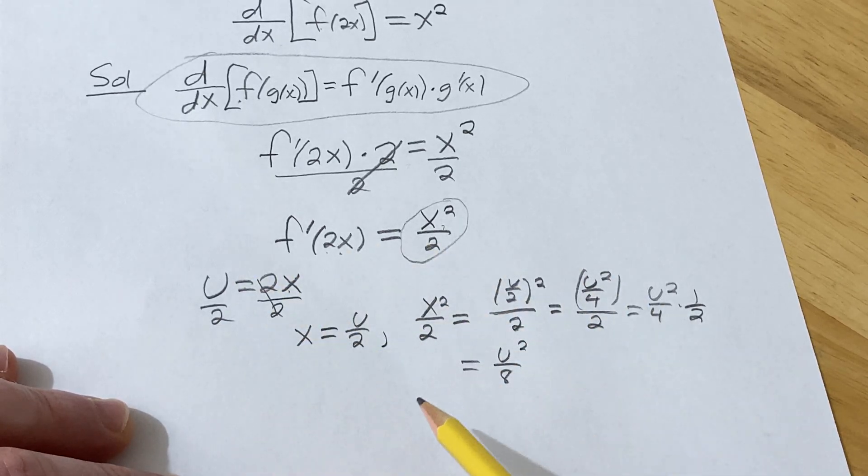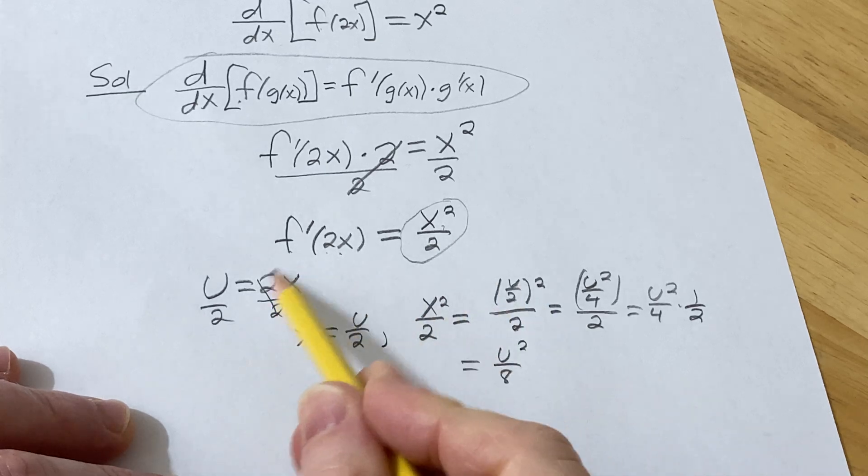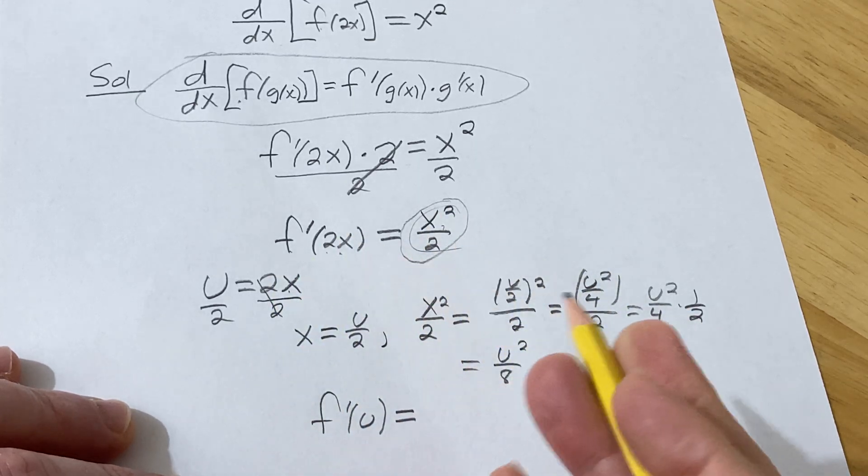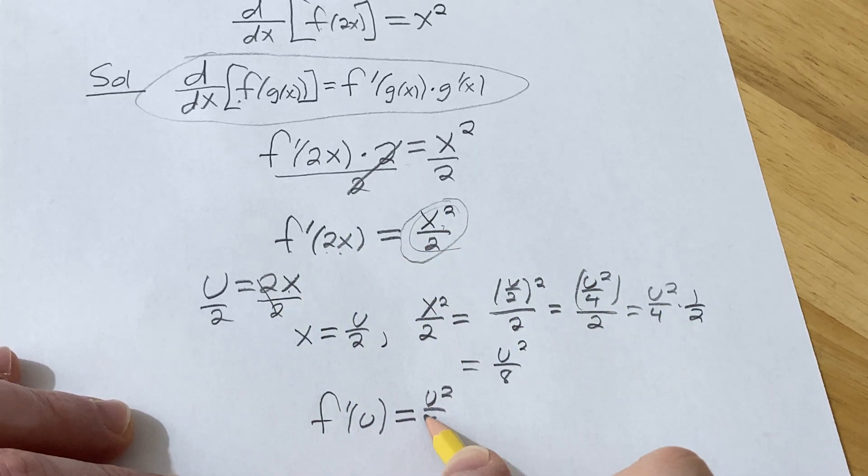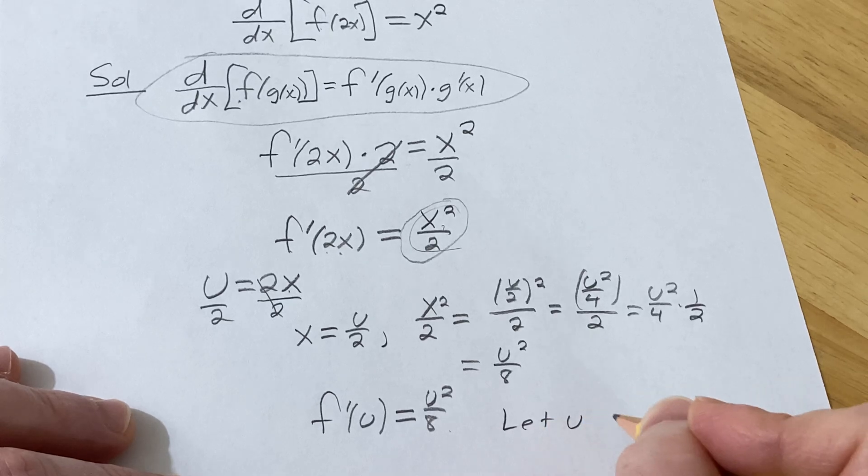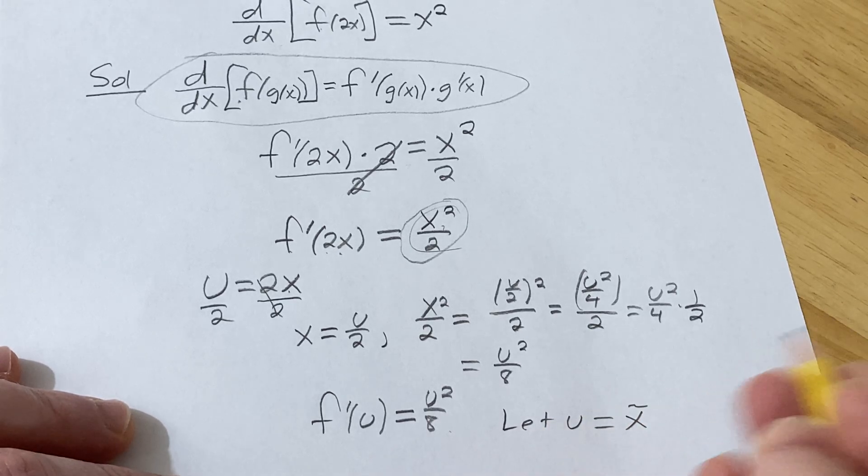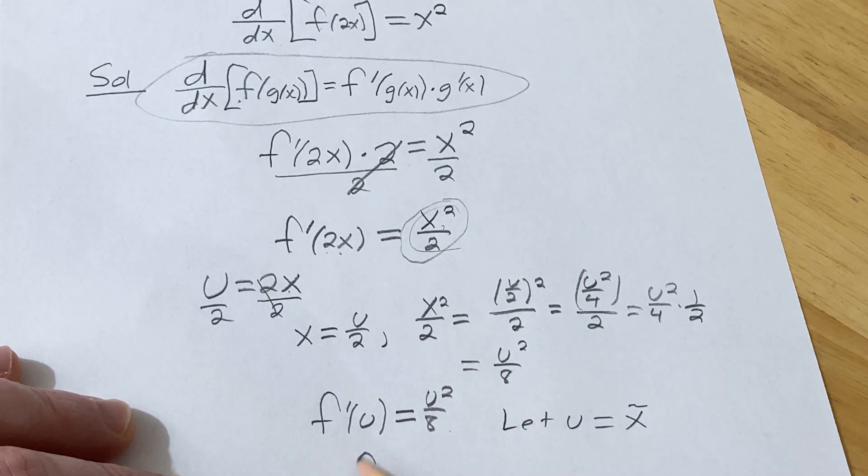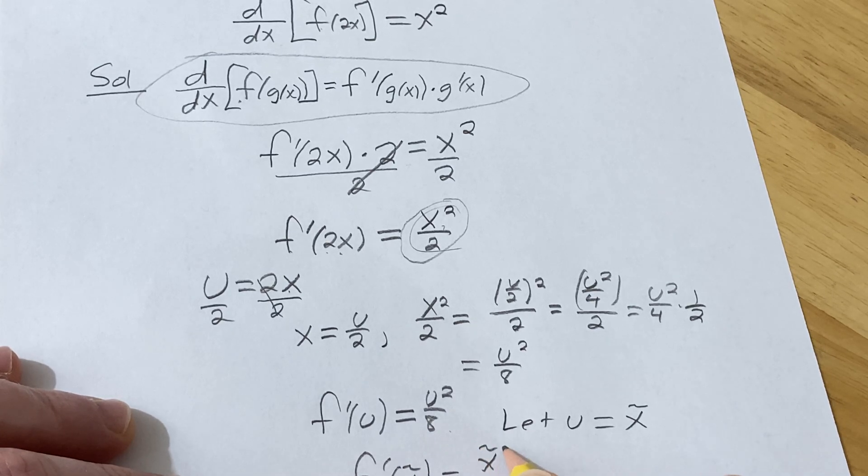Let's rewrite what we have here. So now we have f prime of u equals, because u is 2x, and then we worked all this out, it's just going to be u squared over 8. So that's going to be the answer. If we just rename everything, let u equal x tilde, if you want to go back to x, f prime of x tilde is going to be x tilde squared over 8.